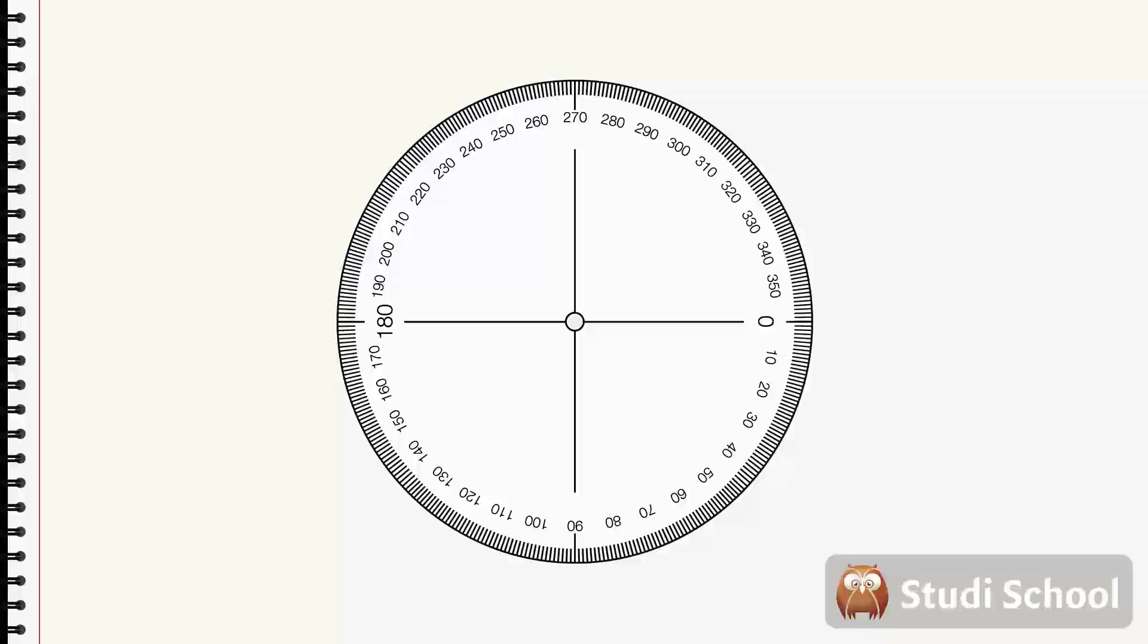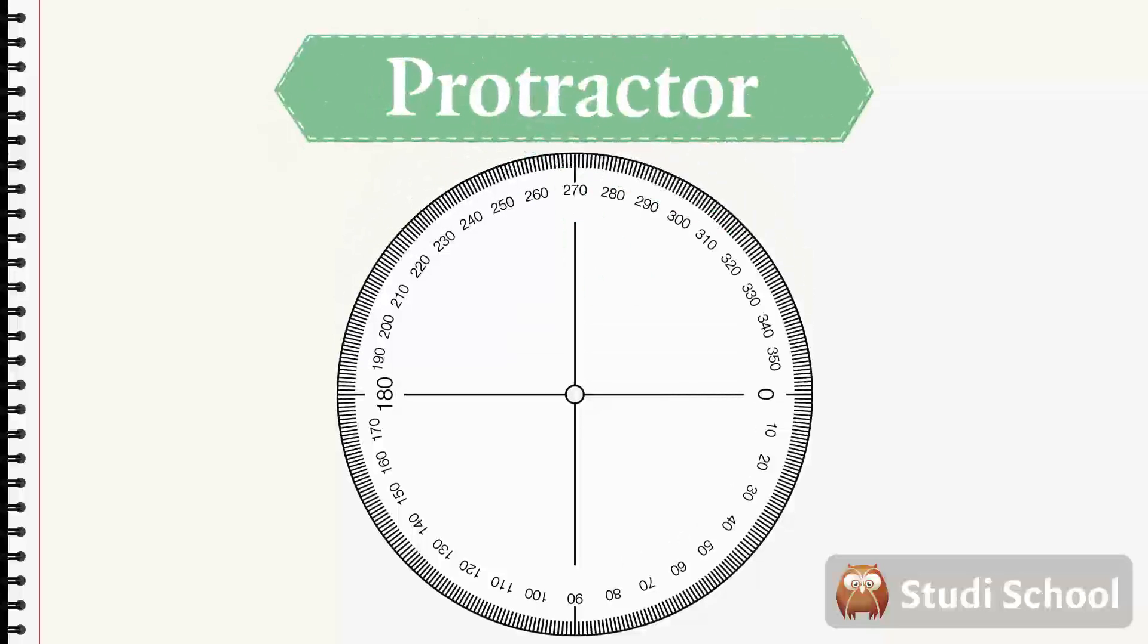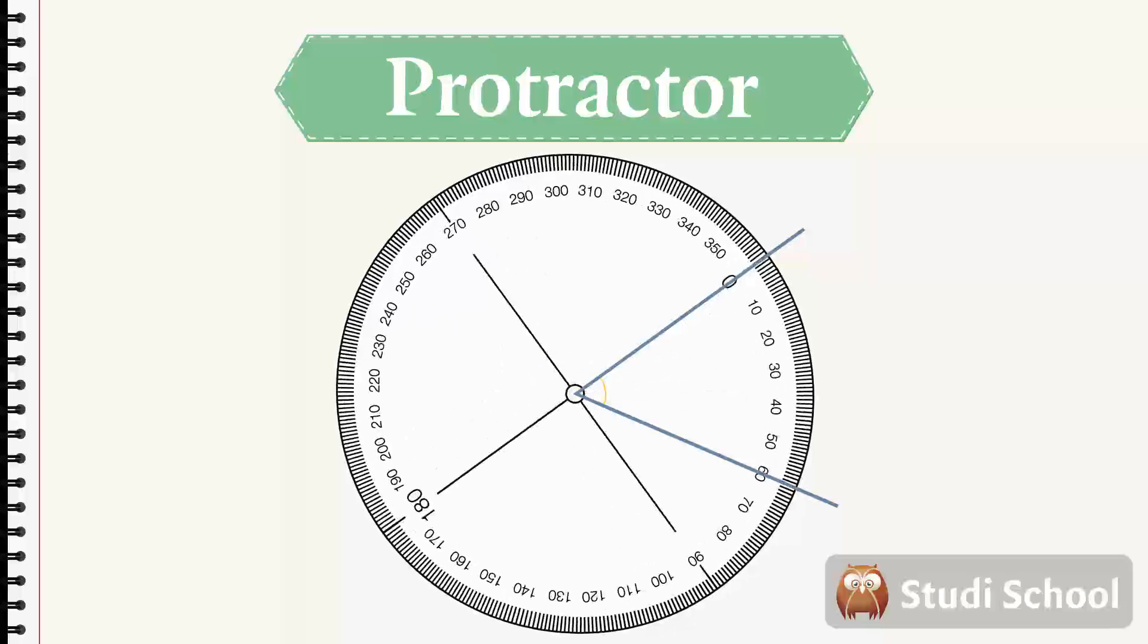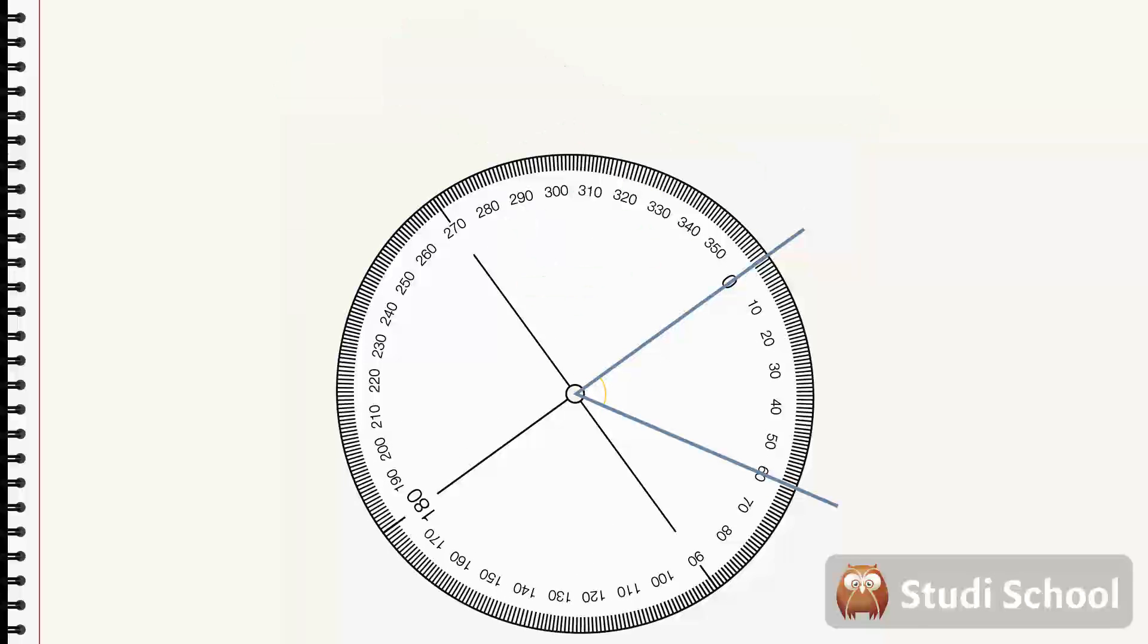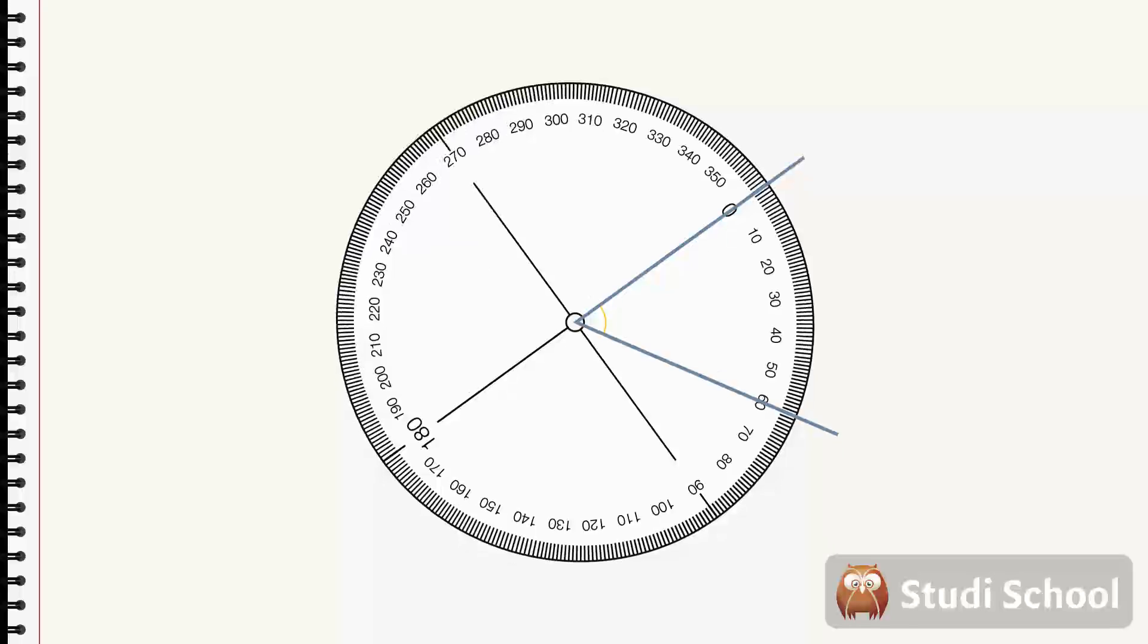If you draw a scale like this on a round piece of transparent plastic, you get a protractor. A protractor is useful to measure angles. Place the midpoint at the vertex and turn until one side is at zero. Then you can read how many degrees by seeing which number is at the other side of the angle.